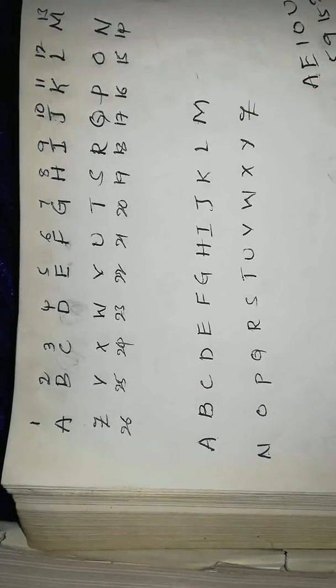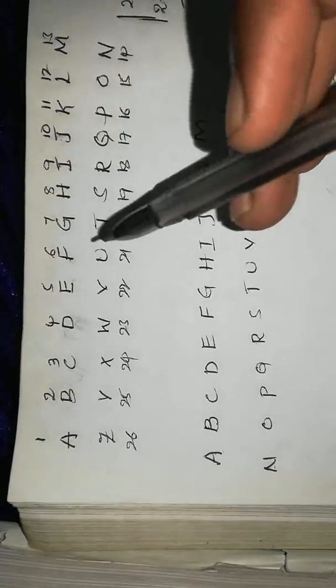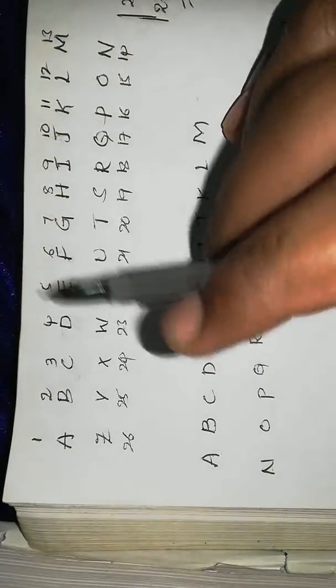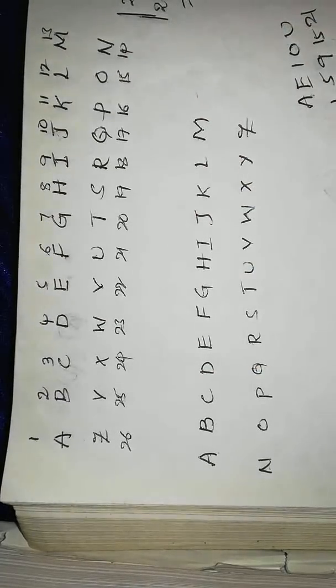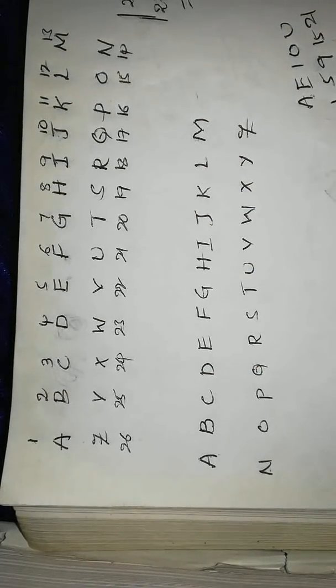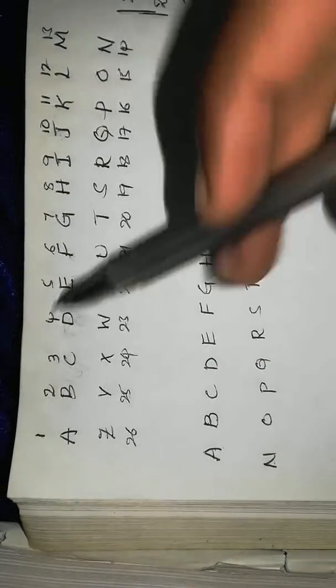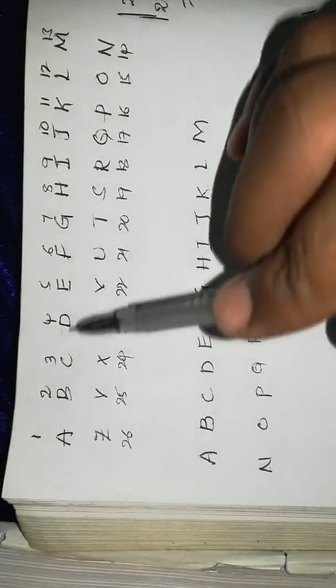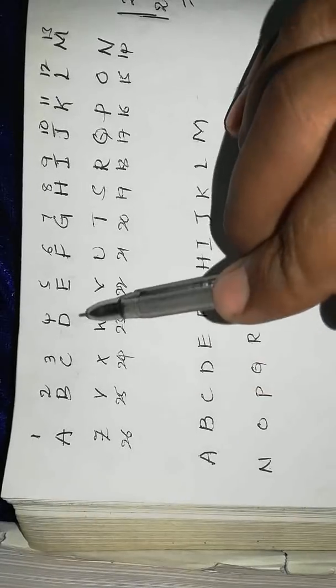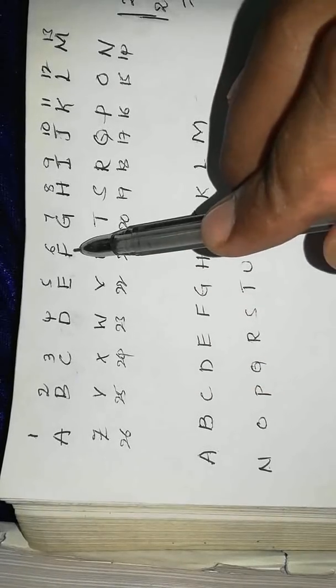We have to learn logic. Logic is not easy. We have to learn: A is 1, B is 2, C is 3, D is 4, E is 5, F is 6.